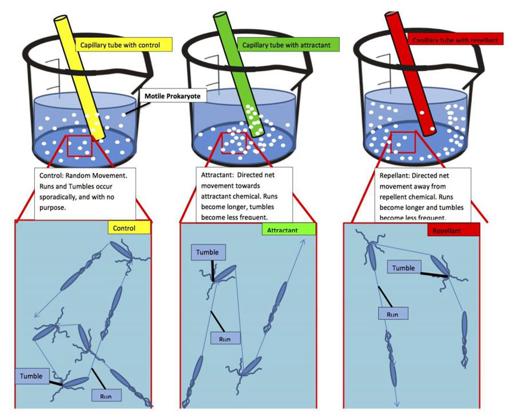Chemotaxis is the movement of an organism in response to a chemical stimulus. Somatic cells, bacteria, and other single-cell or multicellular organisms direct their movements according to certain chemicals in their environment.